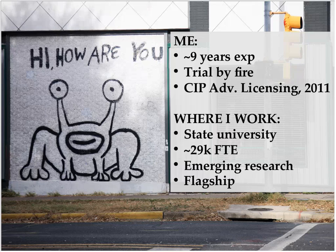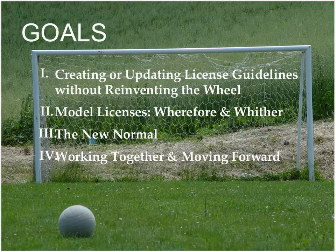I work at a state university in Texas — a public institution, pretty large, with almost 30,000 FTE. We're an emerging research institution, with a focus on supporting research and developing research initiatives. We're the flagship institution of a system of about five schools, so I negotiate licenses on behalf of our group with major publishers. Today we're going to talk about how you can create or update license guidelines without reinventing the wheel, look at model licenses in the industry, discuss where there are gaps and the new normal, and talk about how we can work together and move forward as a licensing community.